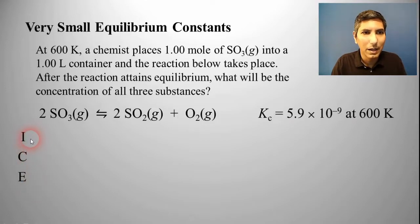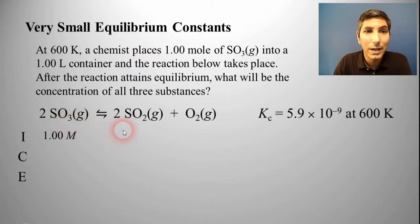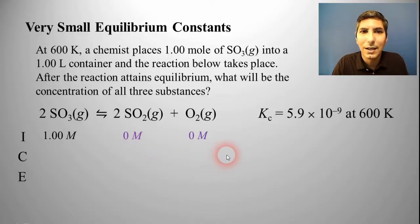Does the problem tell us the initial concentration of sulfur trioxide? We can figure that out. One mole divided by one liter, that's 1.00 molar for our concentration of SO₃. It doesn't tell us what the initial concentrations of our other substances are, so we can call those zero. If it doesn't tell us what the initial concentration of a substance is, it's safe to assume that it's zero. It doesn't give us any other information, so we're going to have to do X.